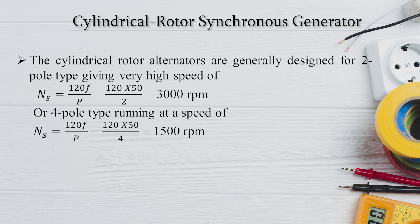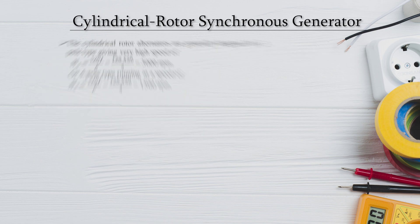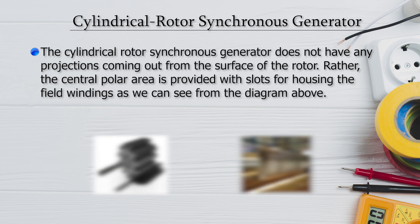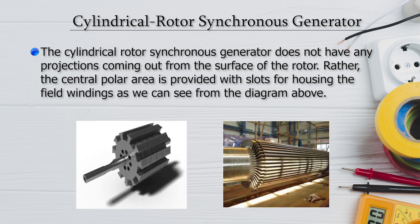We would not use the salient pole type of generators for high speed. The cylindrical rotor synchronous generator does not have any projections coming out from the surface of the rotor, which helps it be used for high speeds. Otherwise, if the poles are projected out, you face wind resistance there, resulting in a lot of losses.